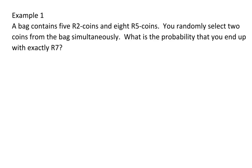For example one, a bag contains five two-rand coins and eight five-rand coins. You randomly select two coins from the bag simultaneously. What is the probability that you end up with exactly seven rand? Because you are removing two coins simultaneously, a tree diagram will be sensible. This tree diagram will have two branches, and the first one will be for the first coin that you remove, with two options.